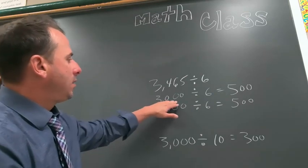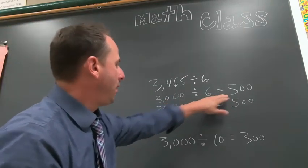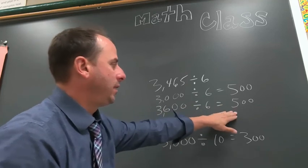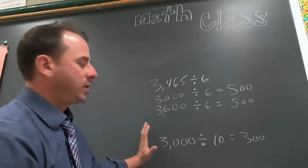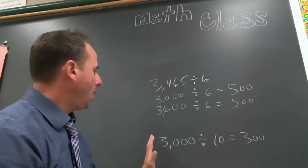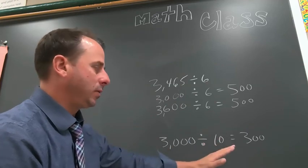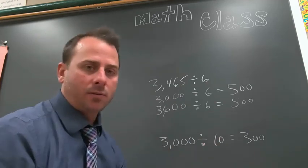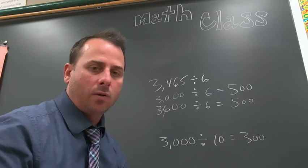So 3,000 divided by 6 is 500, 3,600 divided by 6 is 600, versus the rounding method of 3,000 divided by 10 equals 300. I'm going to pause it right here and I'm going to show you one more example.